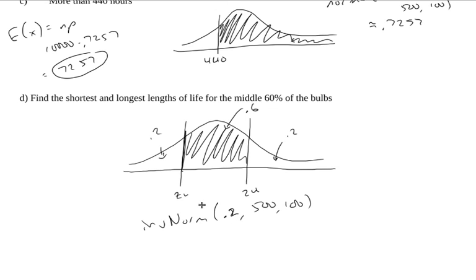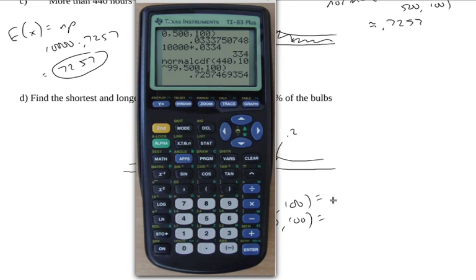And I'll do inverse norm. For the upper cutoff, I'll do 80% of the area. And there's 20% to the right, so I could use the complement rule, or 0.2 plus 0.6 is 0.8 for the upper. So those are going to be my cutoffs, my lower and the shortest and longest lengths for the middle 60% of the bulbs. So if I want to say 60% of the bulbs last between these values, this is what I would do.